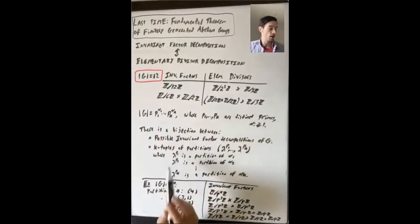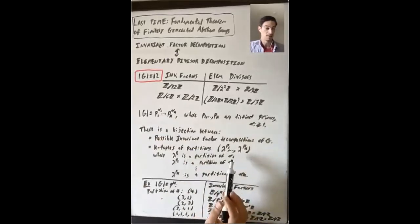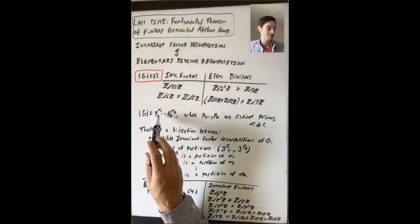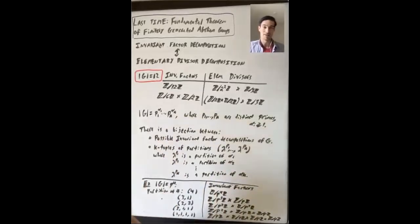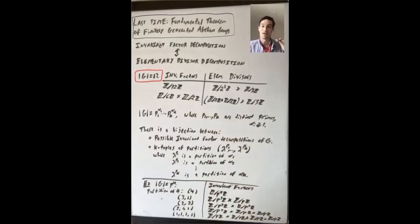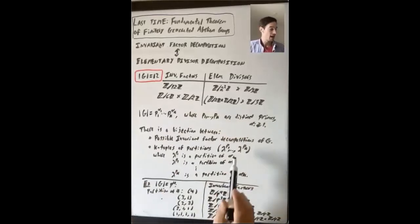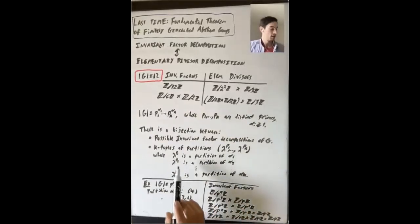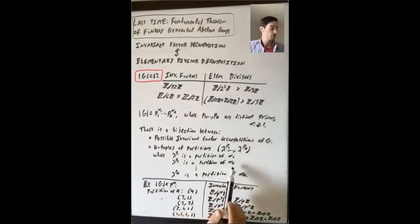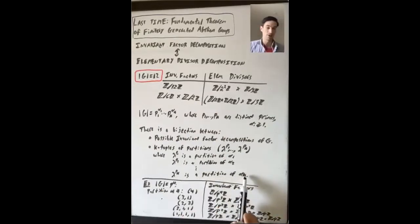Lambda p1 is going to be a partition of alpha1 — how many times does p1 divide the order of the group? p1 divides it alpha1 times. So as we go through the invariant factors, how many times does p1 divide the first one, the second one — we get a non-increasing sequence that adds up to alpha1. Similarly, lambda p2 is a partition of alpha2, up to lambda pk being a partition of alpha k.